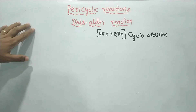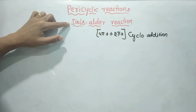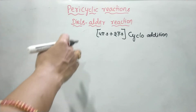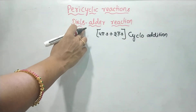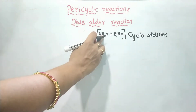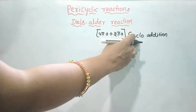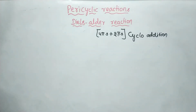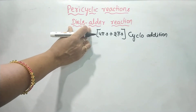Everyone, welcome to Chemistry class. Today's class we will discuss about the Diels-Alder reaction. The Diels-Alder reaction is a 4π supra plus 2π supra cycloaddition reaction that is happening in a concerted mechanism.